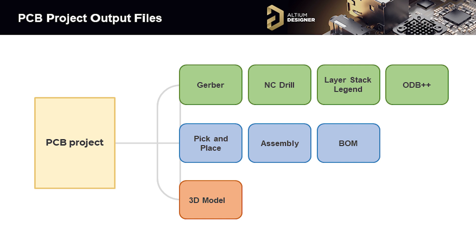The third group of files are used to check models of the device assembly in the product design. A 3D model is useful for design engineers because it's needed for coordination of the device assembly design components and the whole device. Let's start our first poll: what do you send to the PCB manufacturer and to the manufacturing plant?